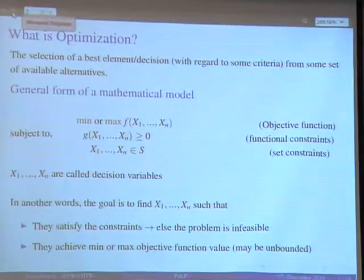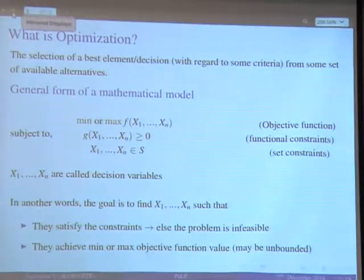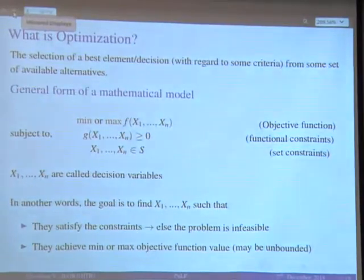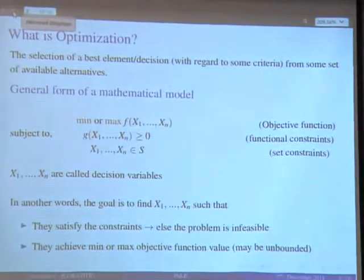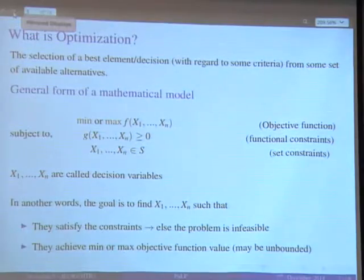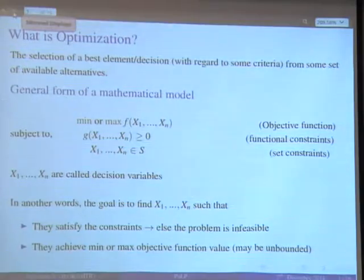So basically in an optimization problem, what do we want to solve? It is a form of mathematical model where we have a set of decision variables we want to decide in such a way that they satisfy various constraints and minimize or maximize some particular objective function. In other words, we want to find the decision variables such that they satisfy the constraints and achieve the minimum or maximum objective value — which can be unbounded or infeasible.